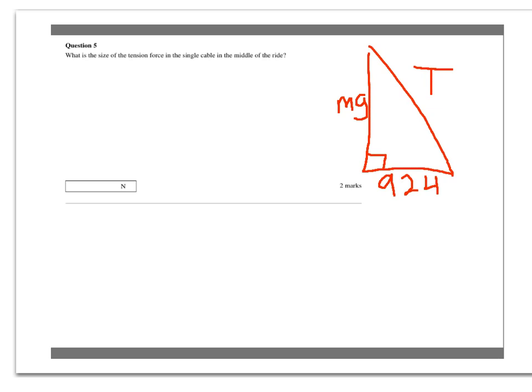So, we could work this out with Pythagoras. We know two sides, a squared plus b squared equals c squared. Or we can use trigonometry, so we know this is 57 degrees. We can say that the sine of 57 degrees equals the opposite over the hypotenuse, 924 over T.